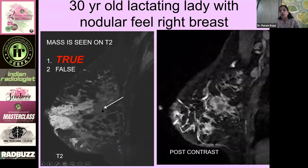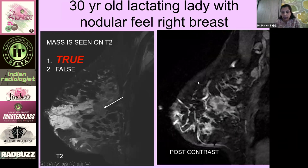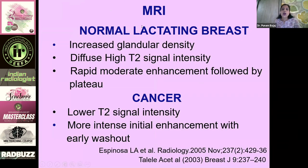The mass is seen, and on the post-contrast image you see an irregular mass with heterogeneous enhancement, some non-uniform cystic spaces, and abnormal lymph nodes — and of course, this was a malignancy. The normal lactating breast shows diffuse high T2 signal intensity and rapid moderate enhancement followed by a plateau. In contrast, cancer will have a lower T2 signal intensity with a more intense initial enhancement and early washout.